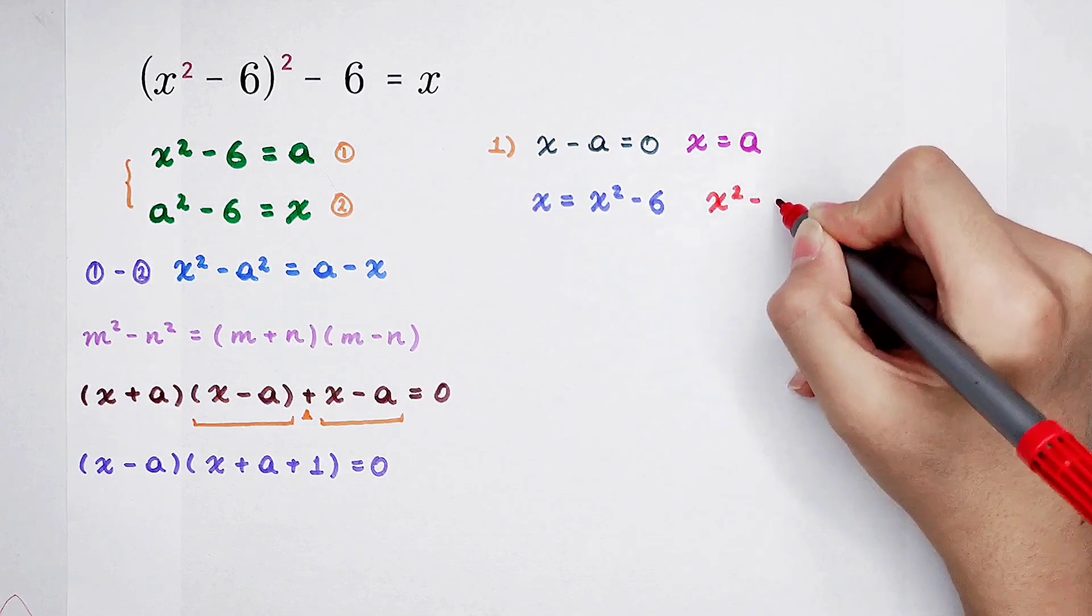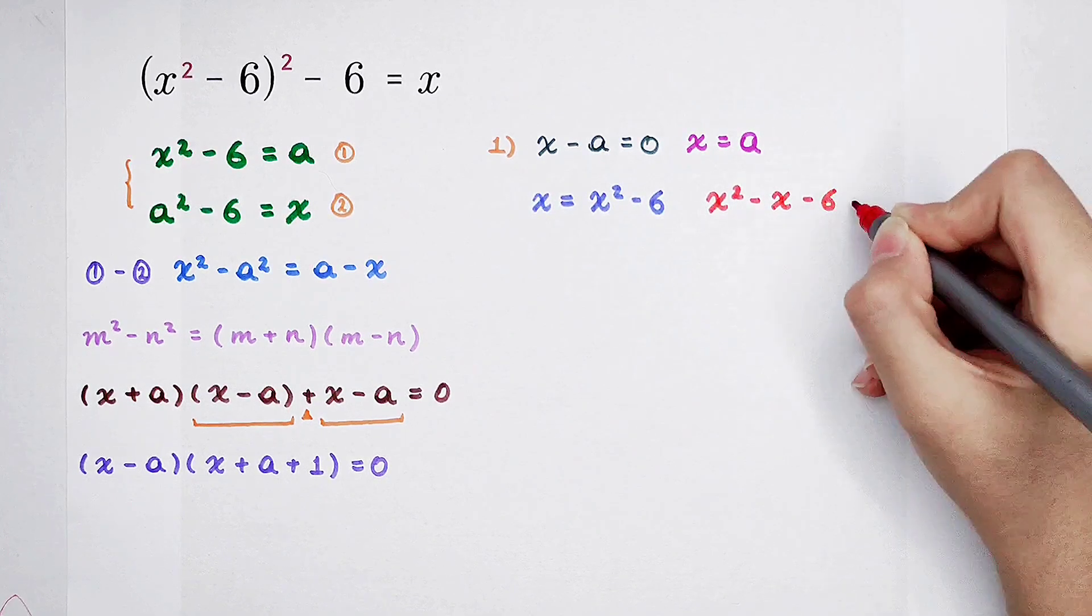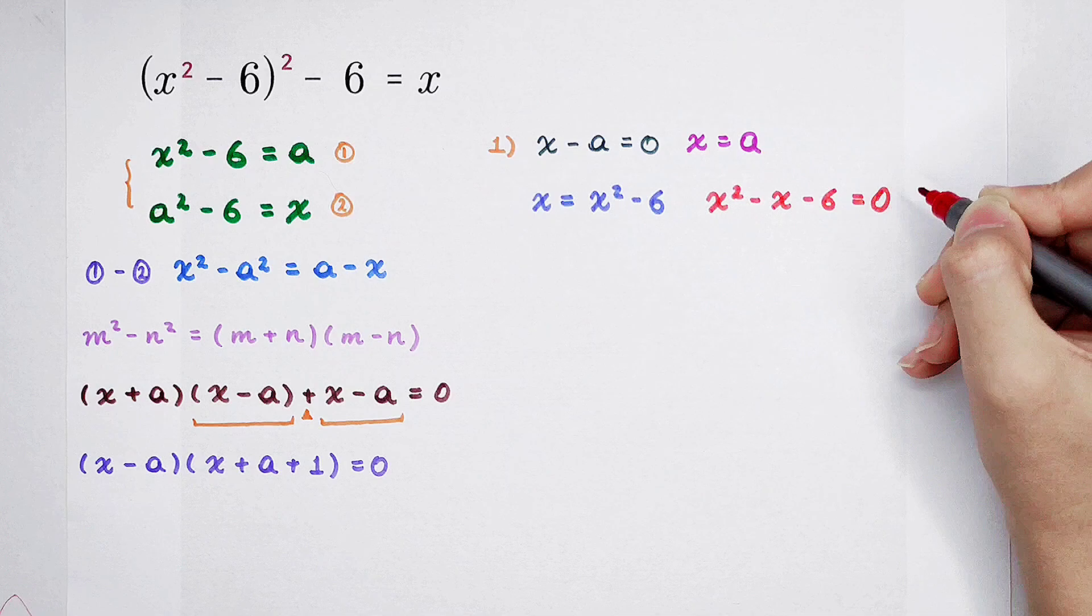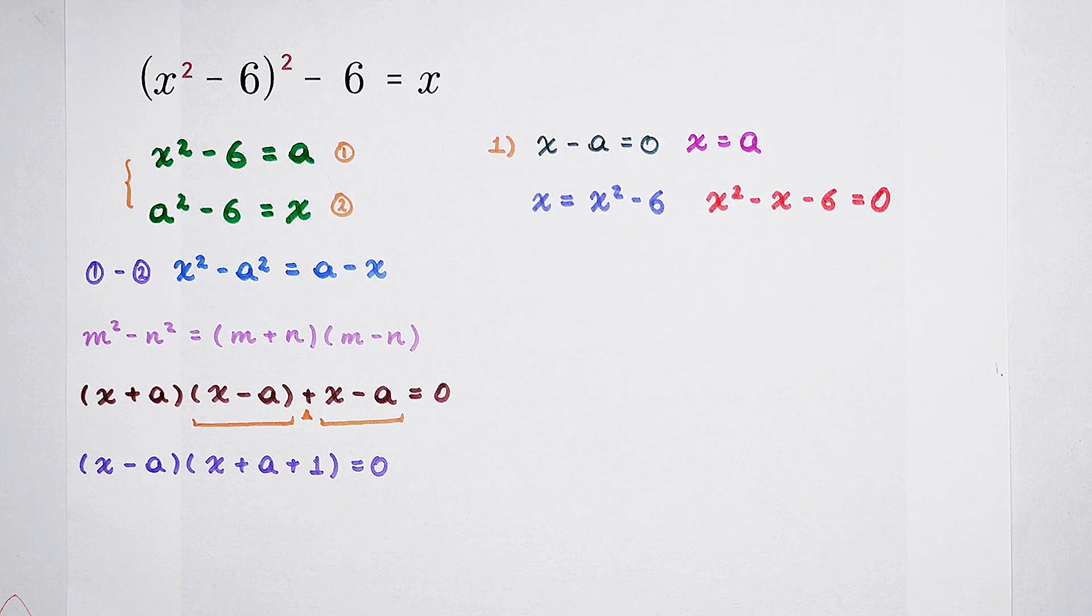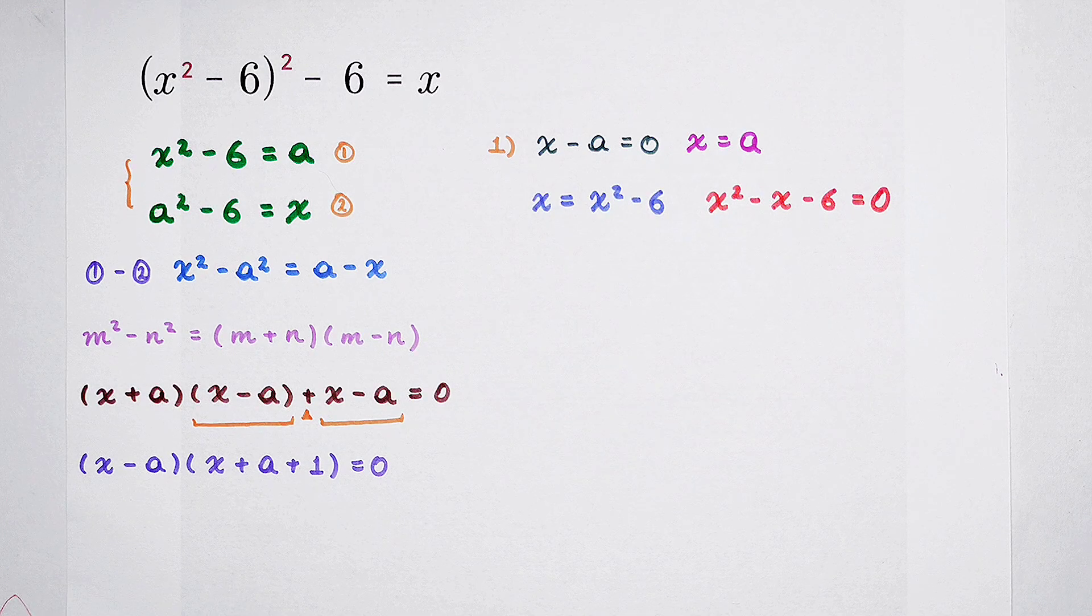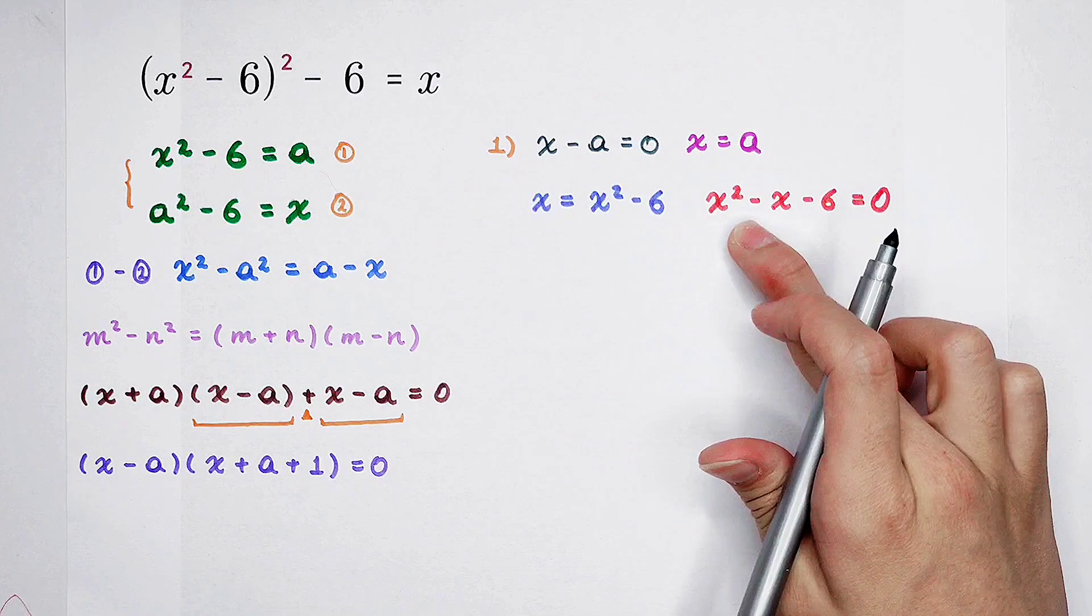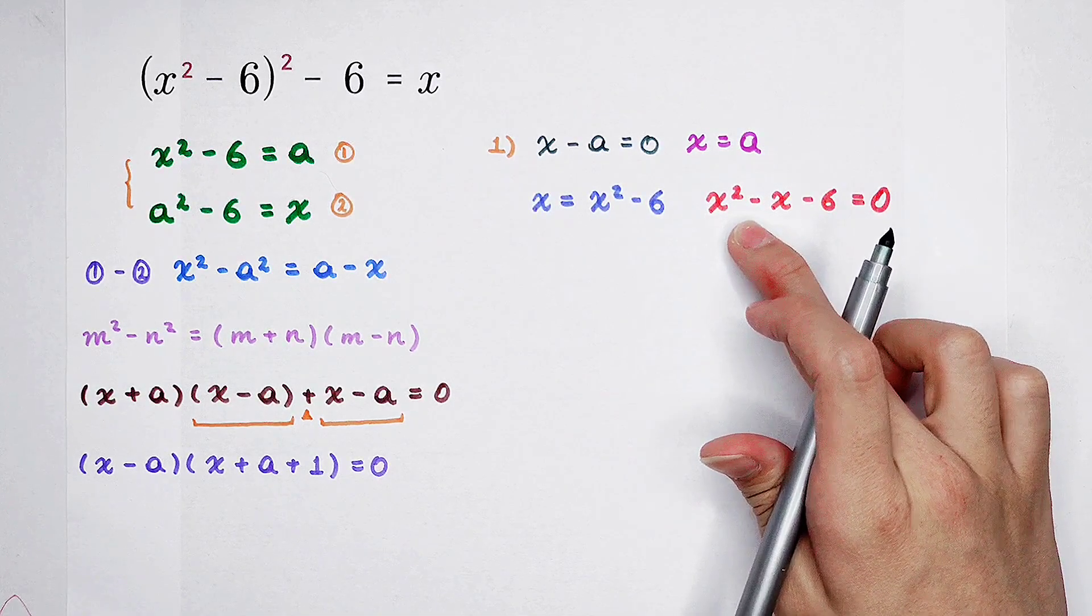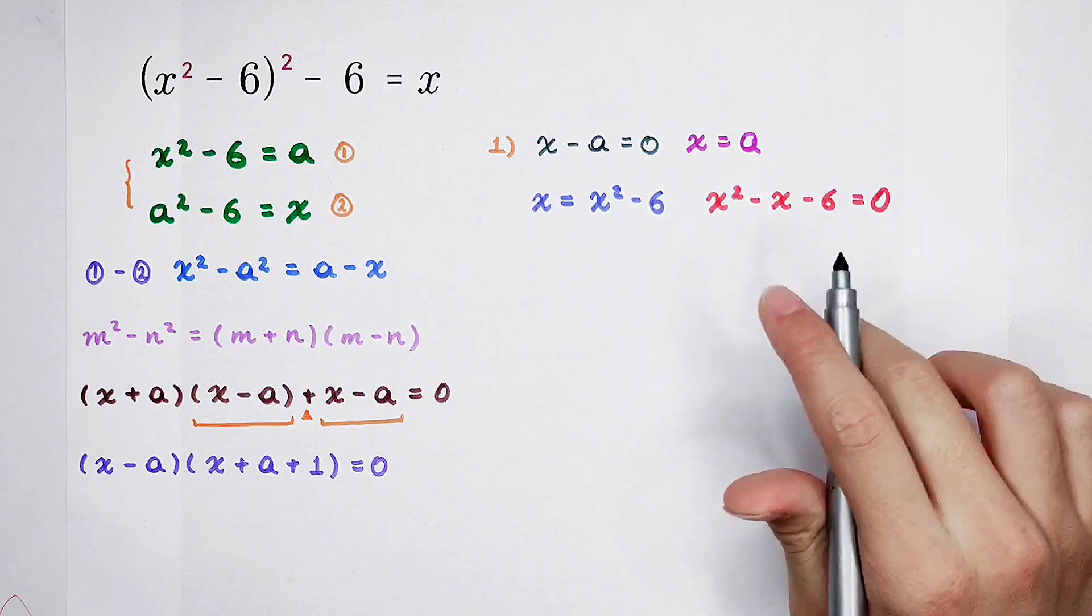x squared minus x, and then minus 6. It's zero. We can factorize the left-hand side. We have to find two integers, such that their product is negative 6, and their sum is negative 1. Of course, these two numbers are positive 2 and negative 3.